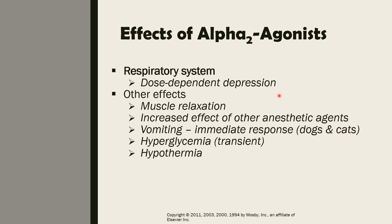There is also vomiting, which is considered an immediate response particularly in dogs and cats — sometimes after a dose of, for example, Dormitor, the animal vomits explosively. We also have hyperglycemia. There is hypothermia, and almost all anesthetics will cause hypothermia.